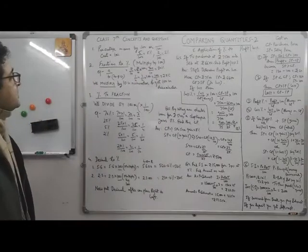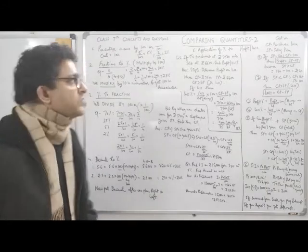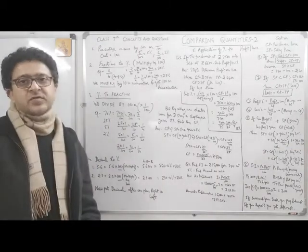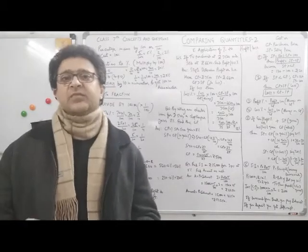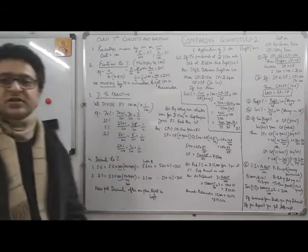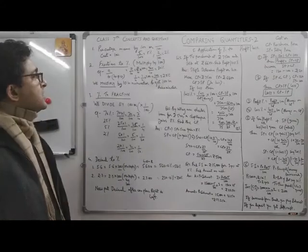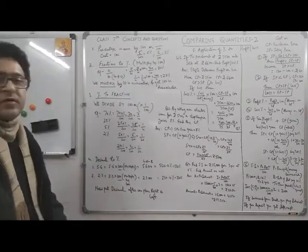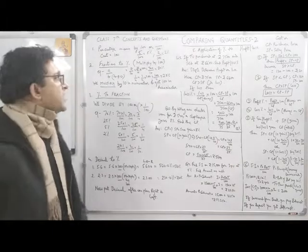Now, fraction to percentage. If we have a fraction and want to convert it to percentage, we simply multiply by 100. So a fraction a upon b (where b is not equal to 0) multiplied by 100 gives the percentage. For example, 7/10 × 100 = 700/10 = 70%, and 1/4 × 100 = 100/4 = 25%. So whenever you want to convert a fraction to percentage, multiply by 100.